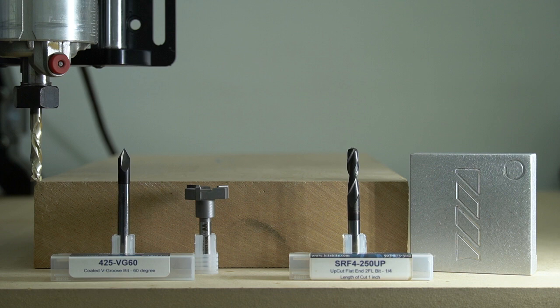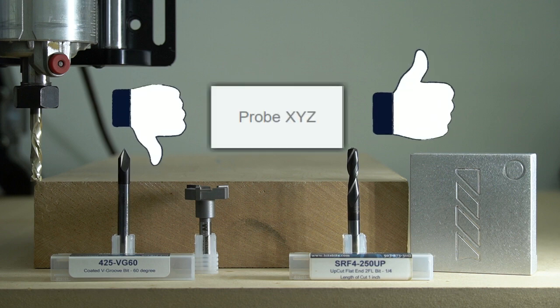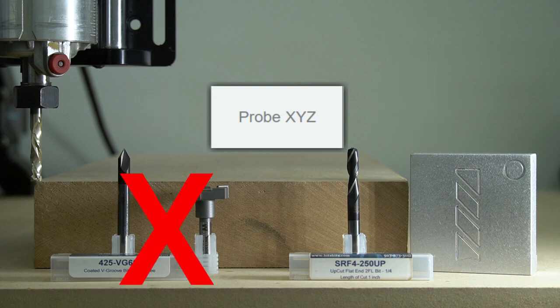Another thing to consider when setting zero is what type of bit you are using and whether or not it is compatible with a probe. On the left we have a V-bit and a surfacing bit, for both of which we are unable to probe both X and Y.